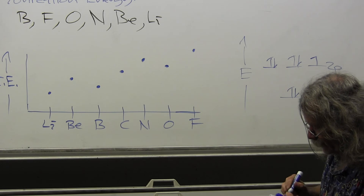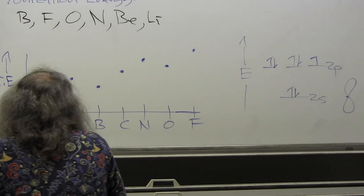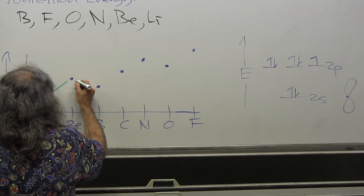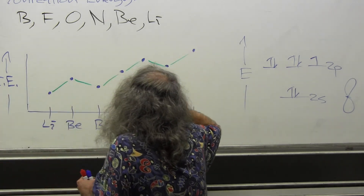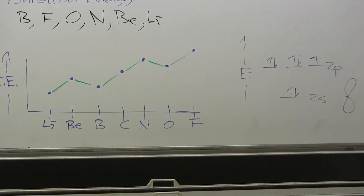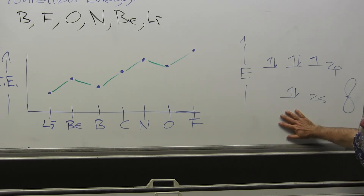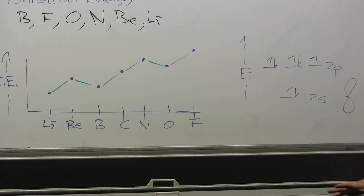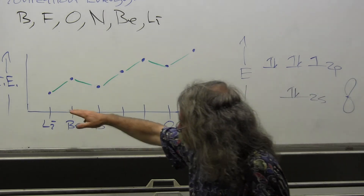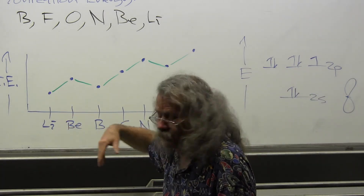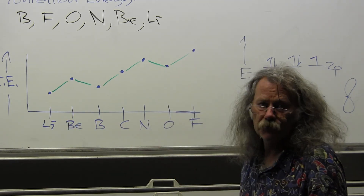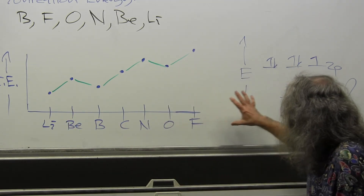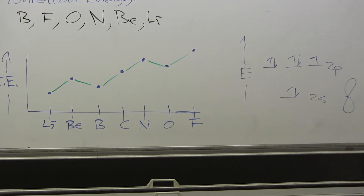Fluorine's ionization energy, like the jump from boron to carbon, is greater than that of nitrogen. That is the complete trend, which looks like a stock market chart but makes perfect sense once we understand the nature of the electron being removed and the increasing nuclear charge across the row.